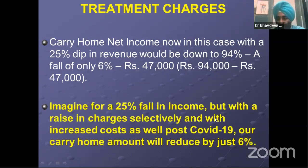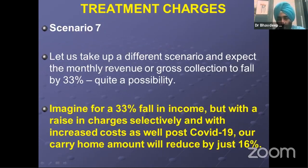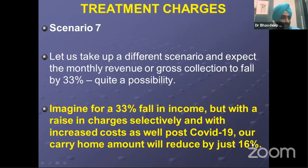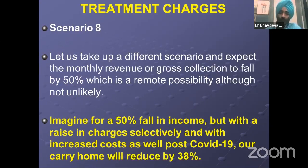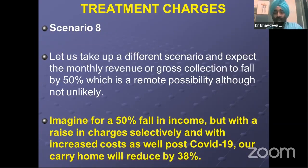Scenario six: revenue falls by 25%. Gross collection reduces from ₹1 lakh to ₹75,000. Increase charges by our formula of 24.5% — we get approximately ₹94,000 in revenue. Expenses: ₹47,000. Carry home: ₹47,000 — a fall of only ₹3,000 or just 6%. For scenario seven with a 33% fall in income, carry home reduces by just 16% — approximately ₹42,000. And even with a 50% fall in income, but selectively increasing your charges, your carry home comes down to roughly ₹31,000, a fall of just 38% instead of 63%.